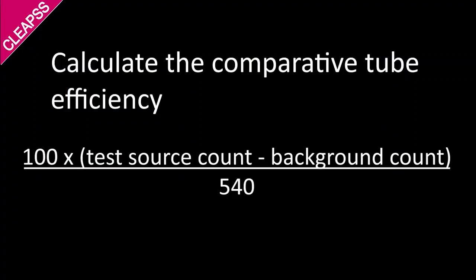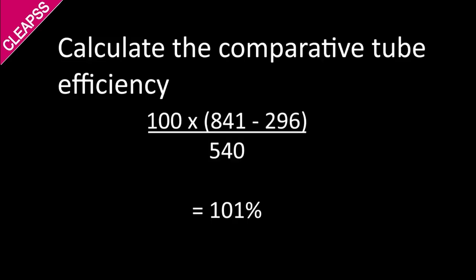Now to calculate the comparative GM tube efficiency, that's how the tube here compares to a new one, multiply 100 by the difference between the test source count and the background count, both taken over 1000 seconds, divided by 540. So in this case it's 100 times 841 minus 296, divided by 540, which comes to 101%. An efficiency between 70% and 150% for the ZP1481, or 70% and 175% for the LND72233 is acceptable.